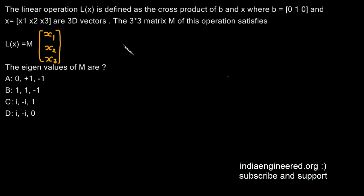This question was from an Electrical 2007 question paper. It's a bit lengthy, so to simplify I'll write it here. The linear operation L(x) is defined as the cross product of b and x, defined as b cross x, where b is [0, 1, 0].